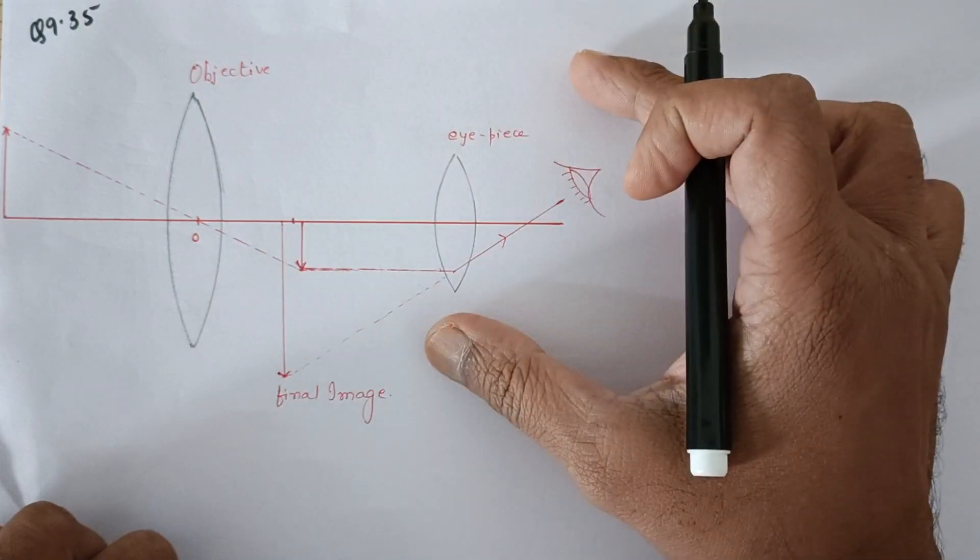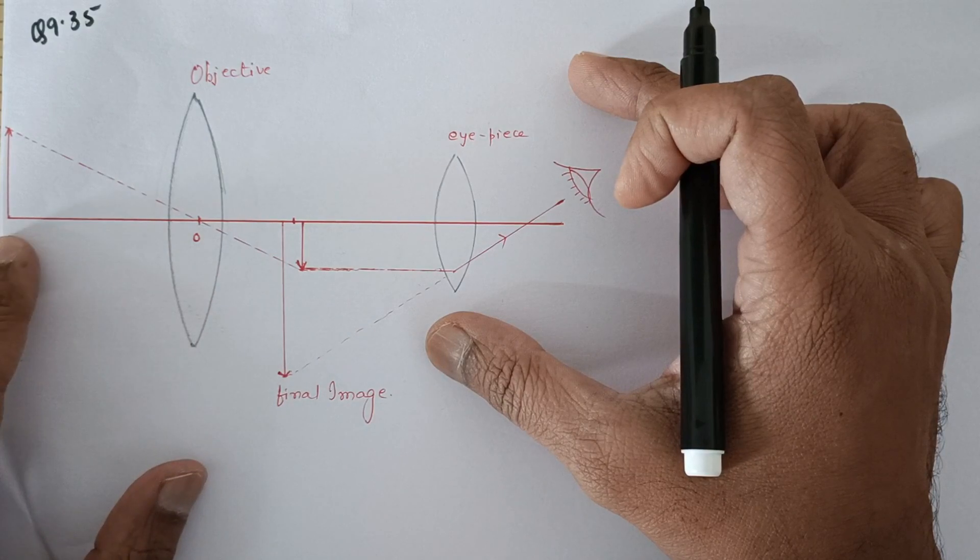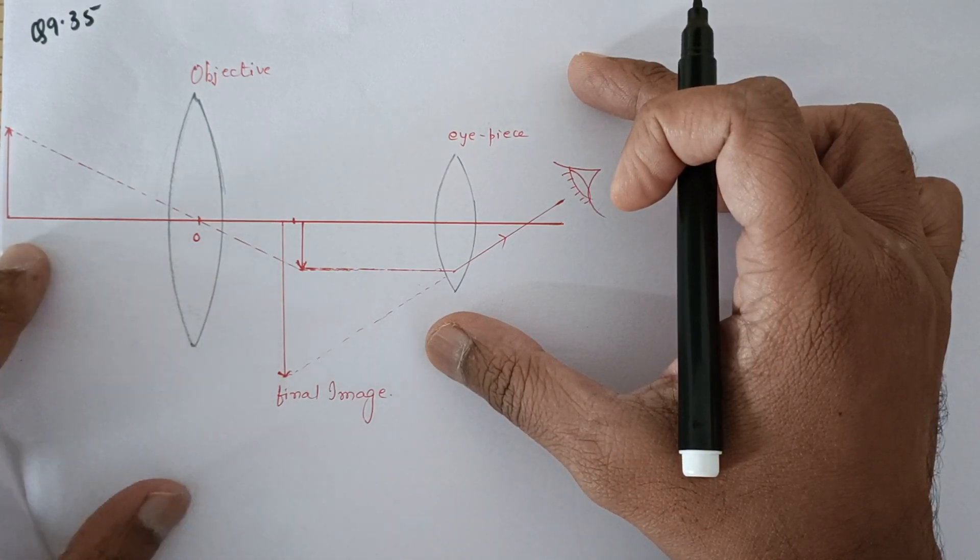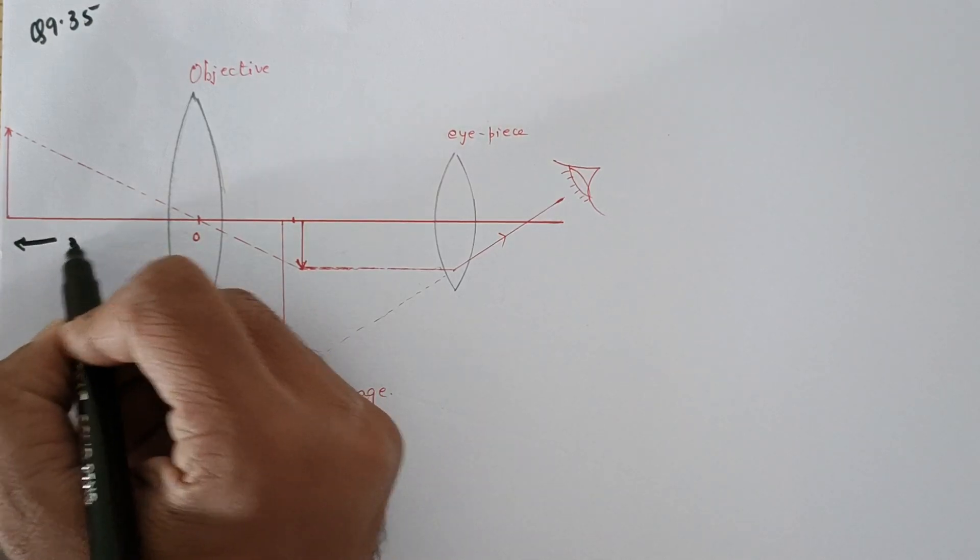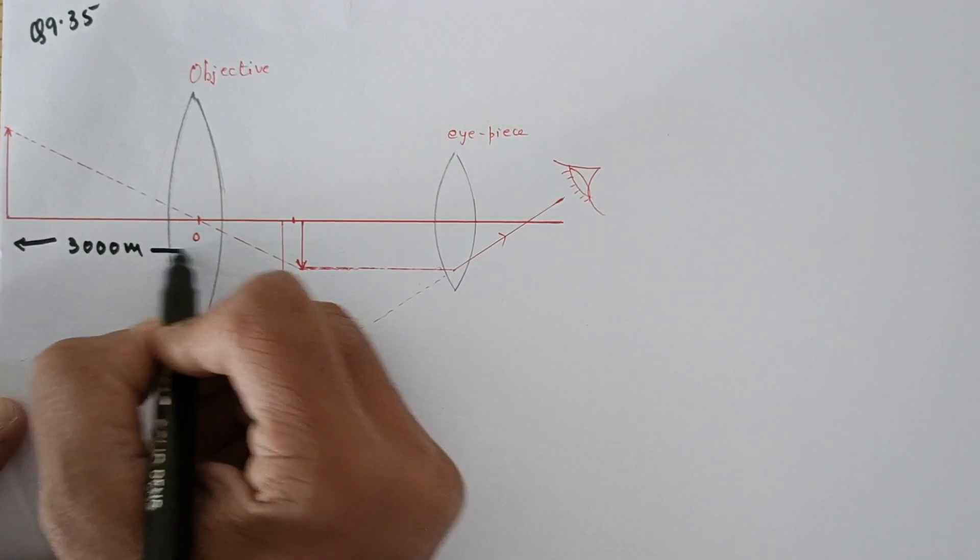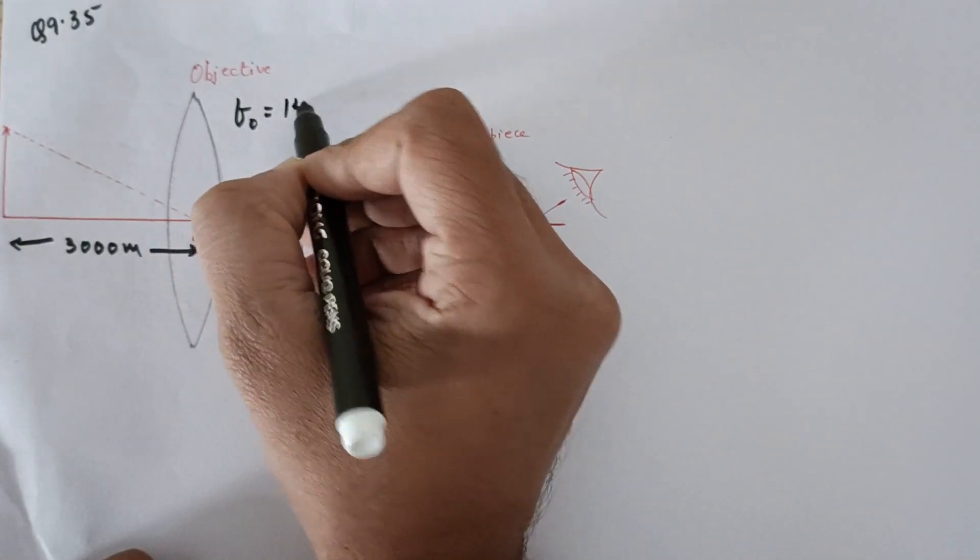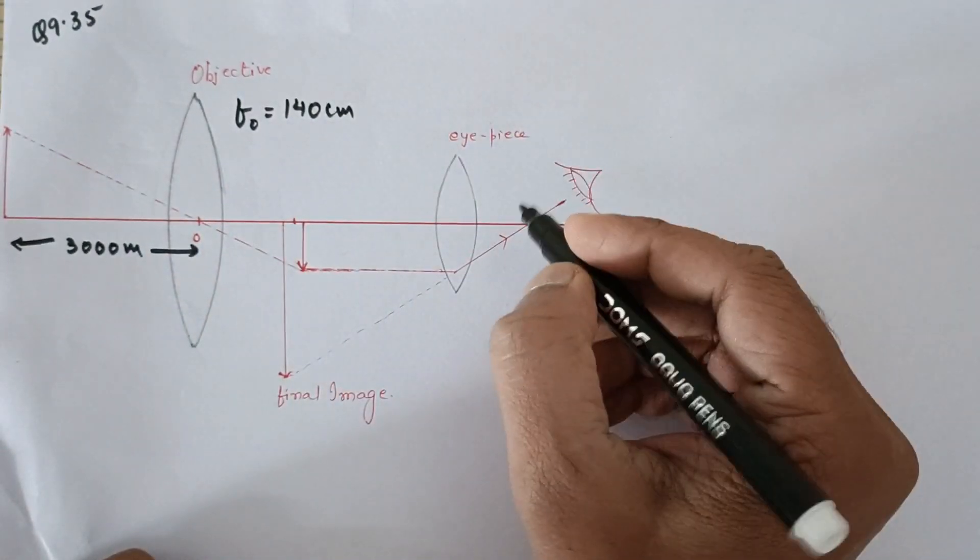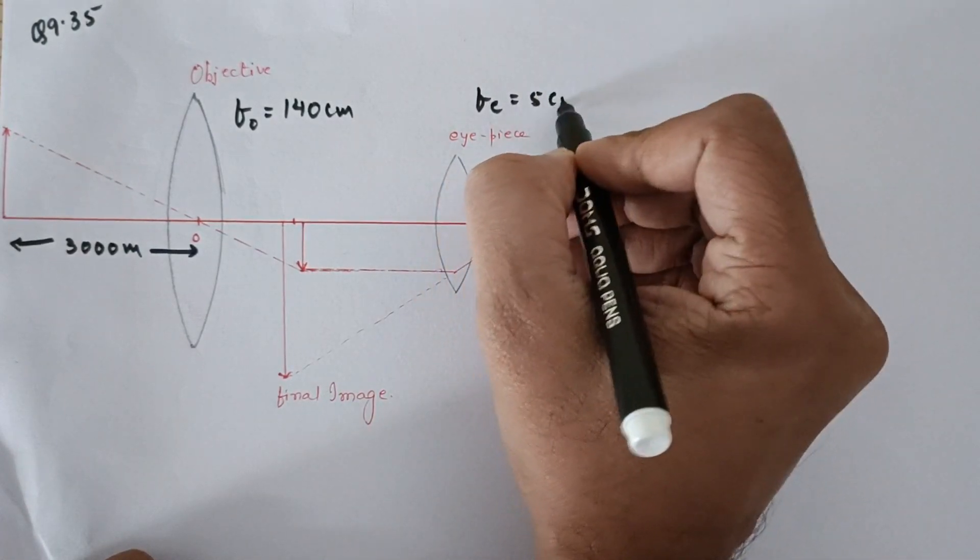The purpose of a telescope is to see very far away objects nearer. This is an object at a distance of 3 kilometers away from the objective, so this distance is 3000 meters. The focal length of the objective is given as 140 centimeters and the eyepiece focal length is given as 5 centimeters.